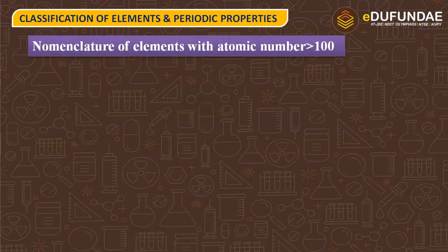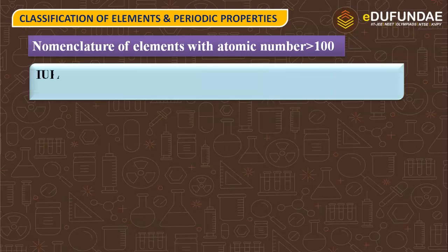So let us discuss the nomenclature of elements with atomic number greater than 100. How will we name the elements which have an atomic number greater than 100? And here is the solution.